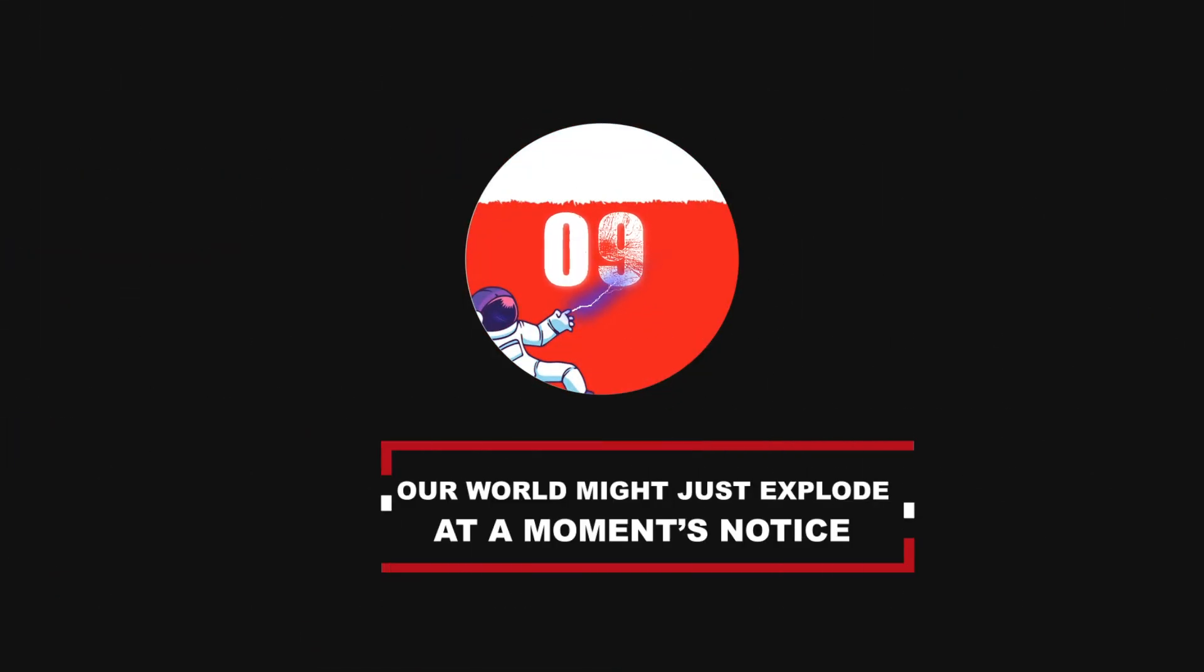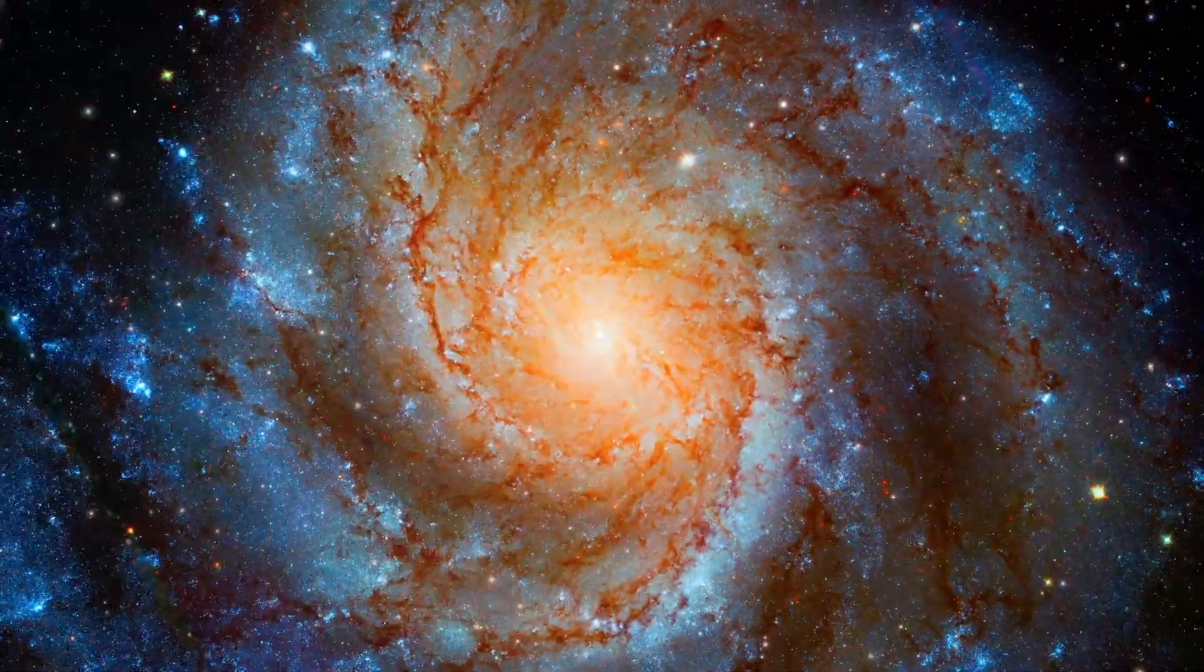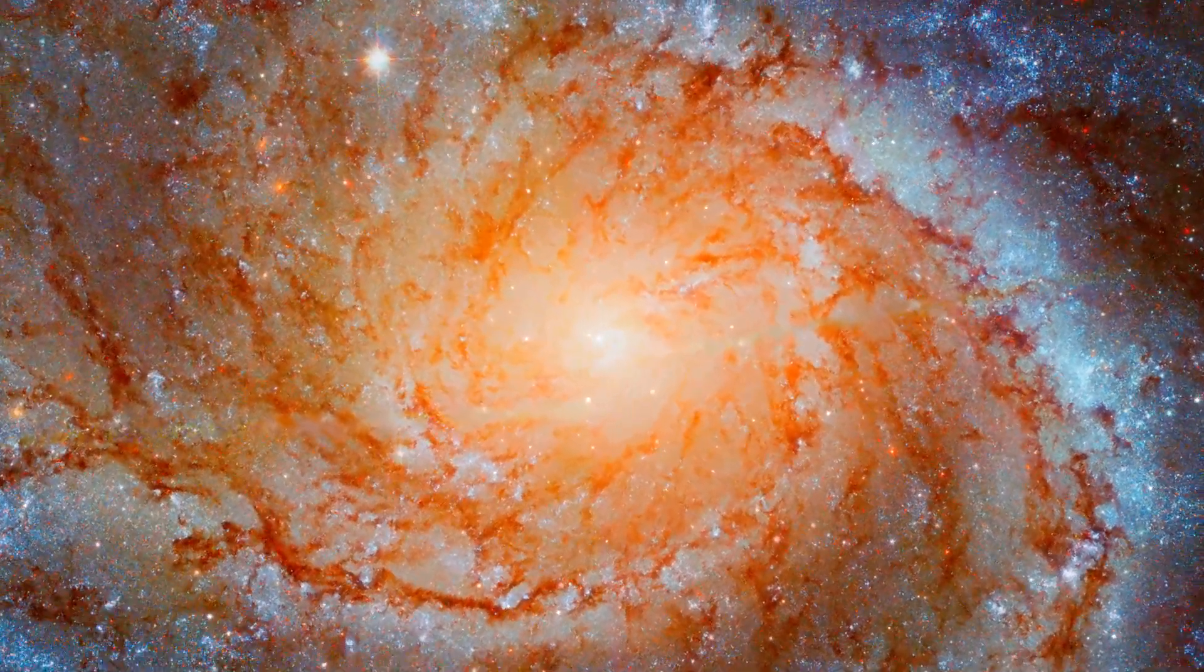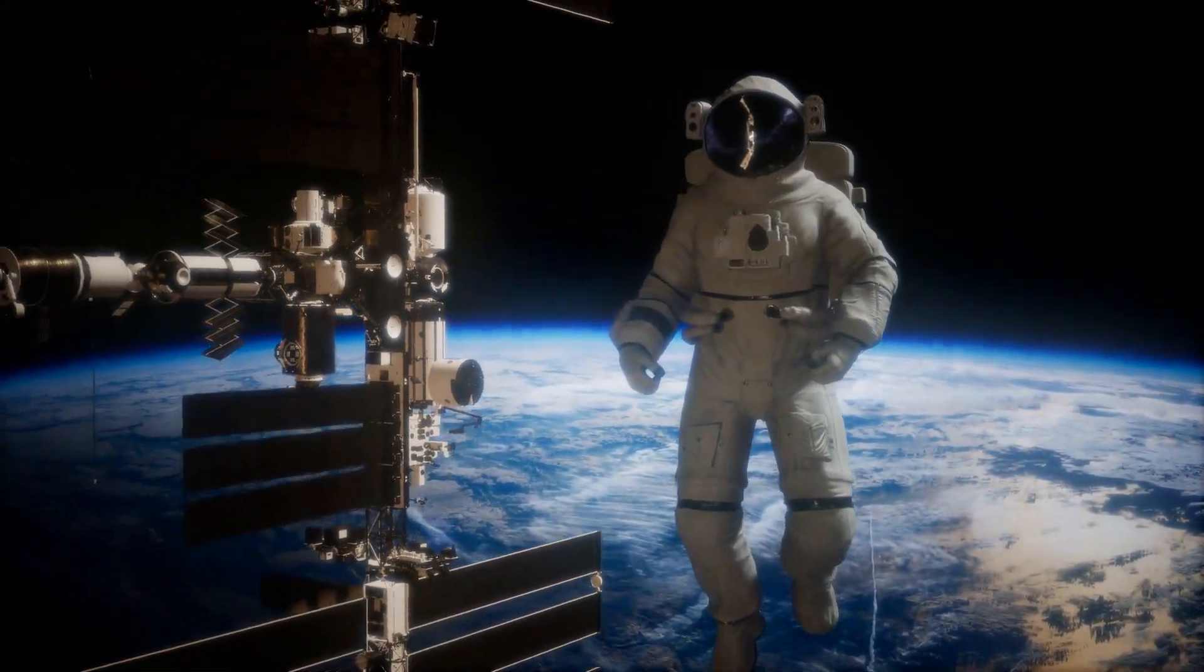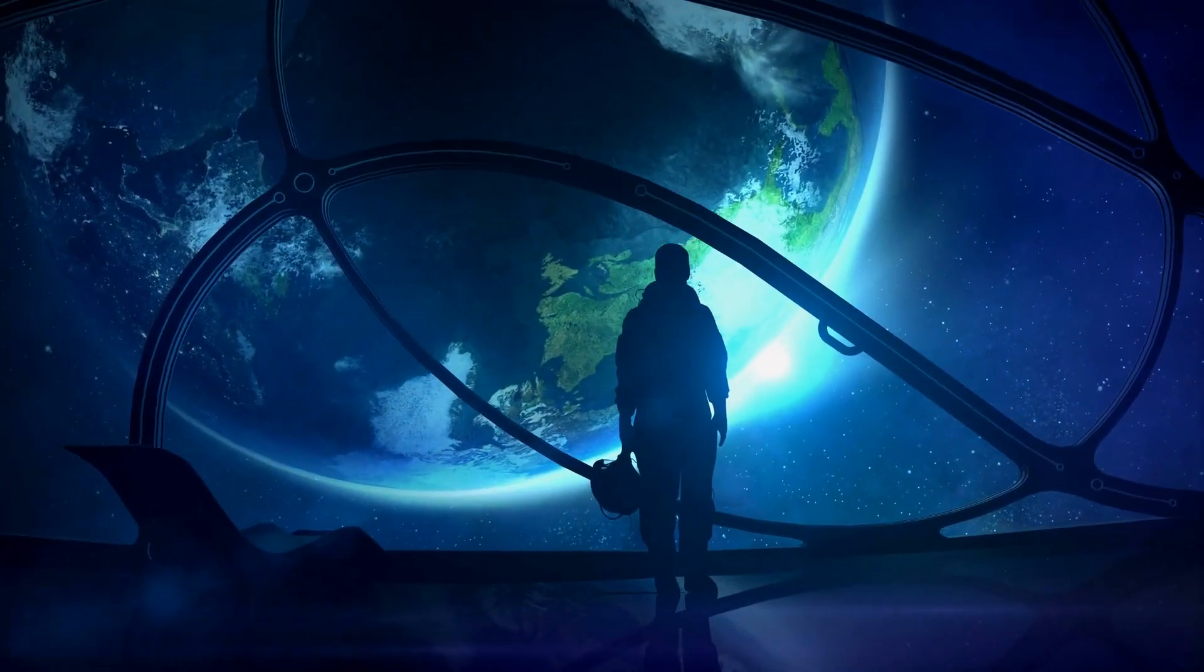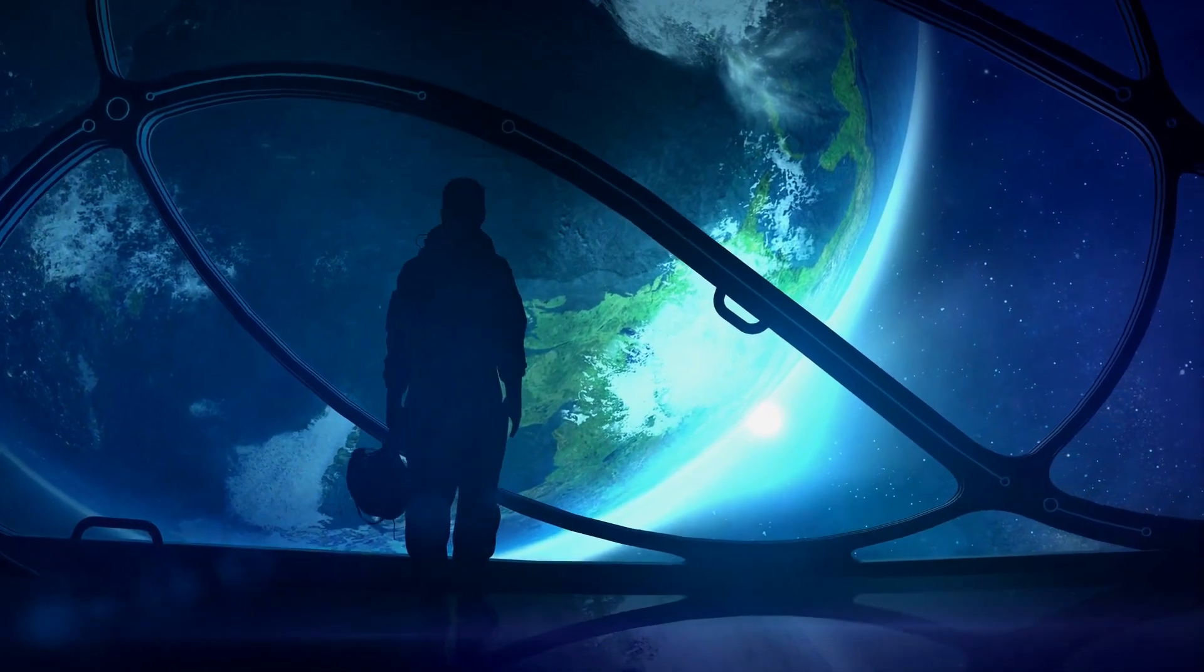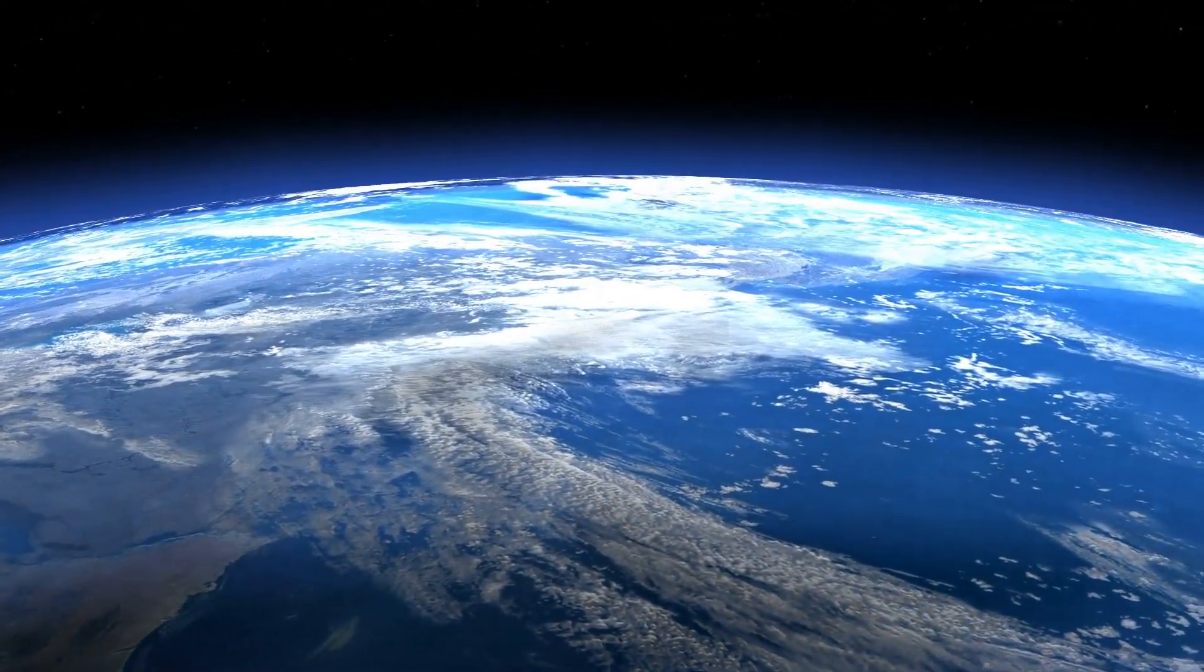Number 9, our world might just explode at a moment's notice. The universe and the galaxies are filled to the brim with deadly stuff that's just ready to attack the earth. Mass extinctions have already taken place on our planet due to space before, such as the mass extinction of the dinosaurs that saw what is believed to be an asteroid hit the earth and caused two-thirds of all animal species on the planet wiped out.